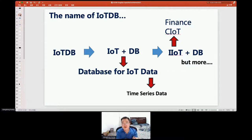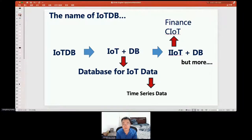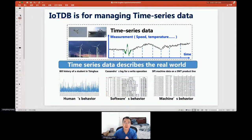I still want to say something about the name 'IoTDB'. It consists of two words: IoT and DB. IoT refers to the target scenario — industrial IoT, consumer IoT, or other scenarios like finance — and DB means the software type: it is a database for IoT data, specifically time series data.